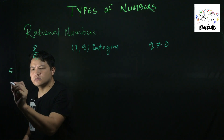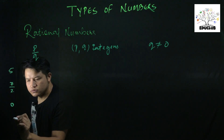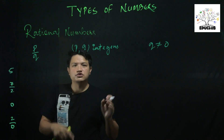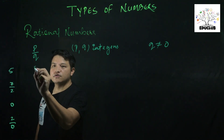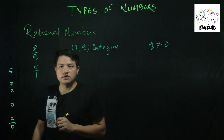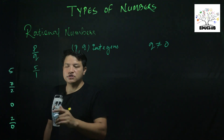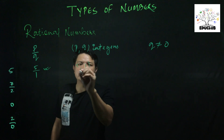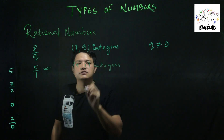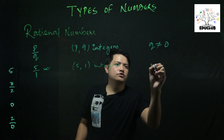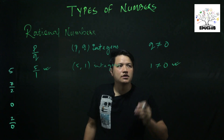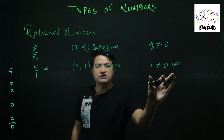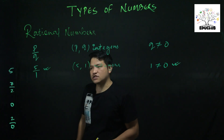Let's check if 5 is a rational number. First, can it be written in p by q form? Yes — 5 can be written as 5 by 1. First condition satisfied. Second condition: numerator 5 is an integer, denominator 1 is an integer — satisfied. Third condition: denominator 1 is not equal to zero — satisfied. So 5 is a rational number.